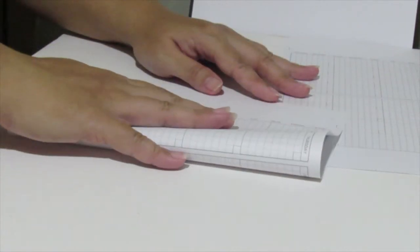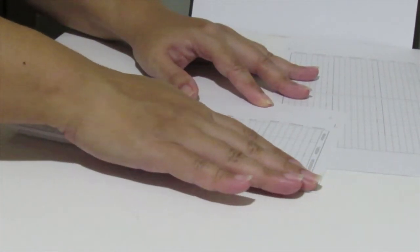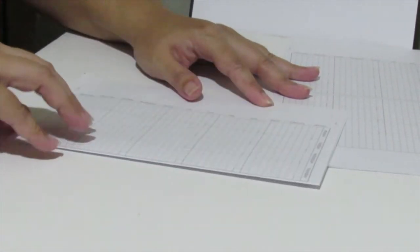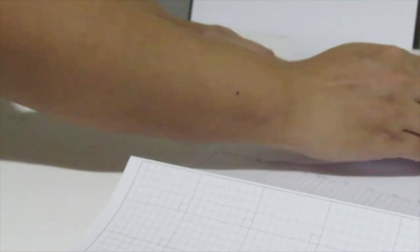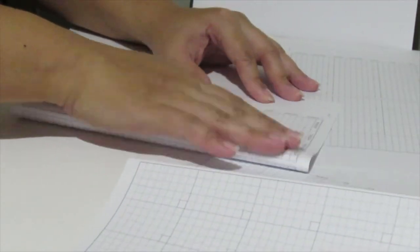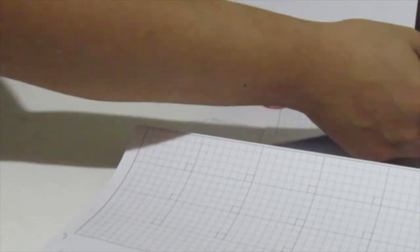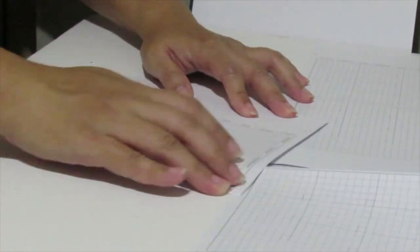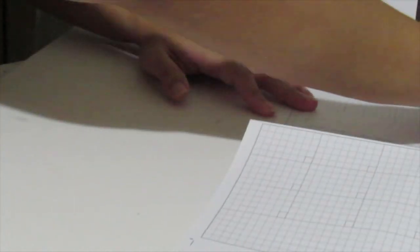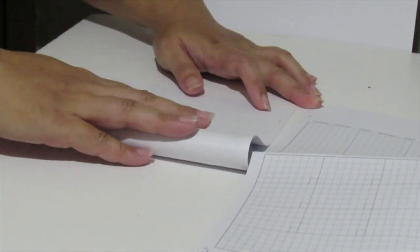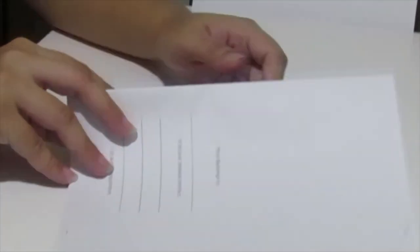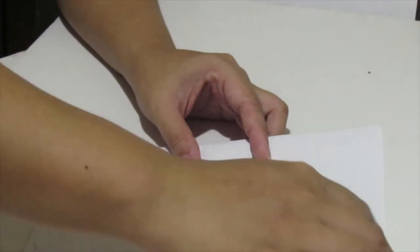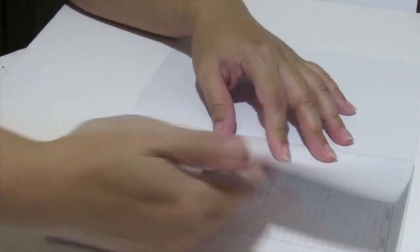Fold your collated pages in the center to form a booklet. Now just add your choice of cover.